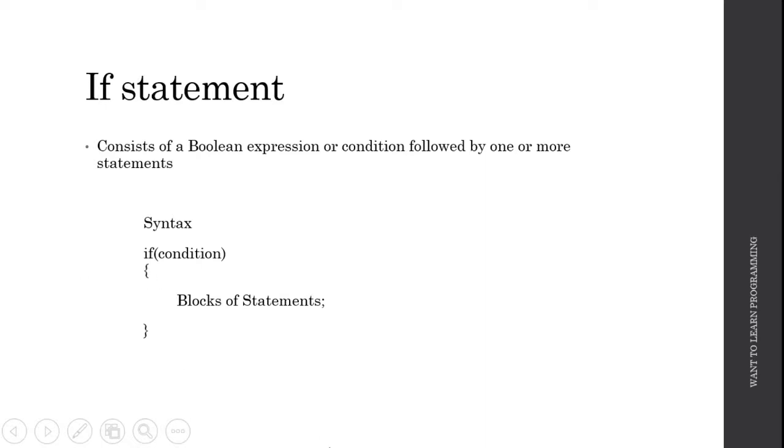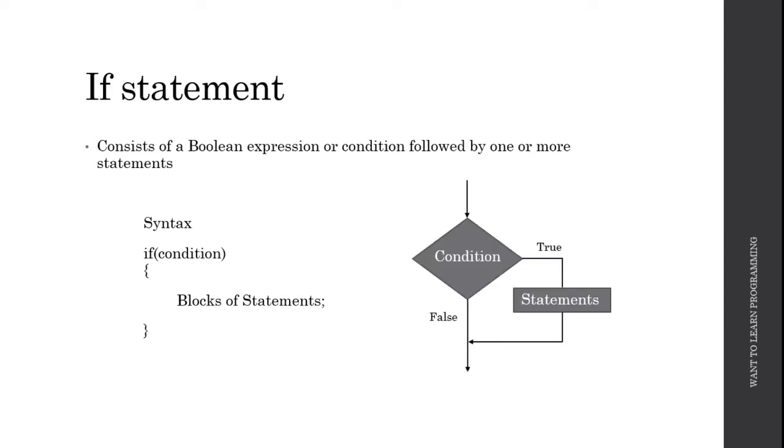Let's look at the flowchart for if statement and understand how this executes. When the code comes to this condition, if the condition is true then this block of statements is executed. If the condition is false then the execution skips this block of statements and continues to the next statement.